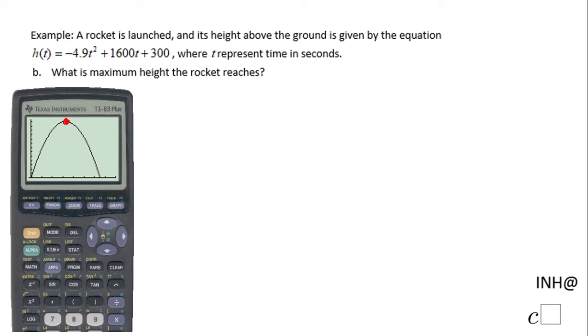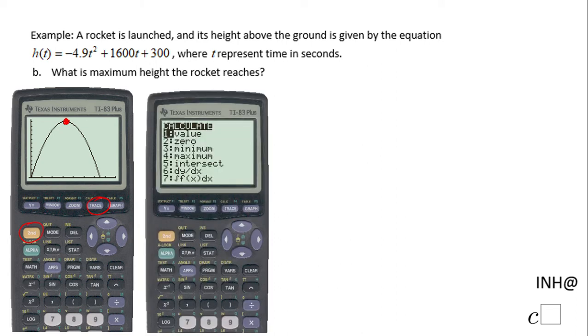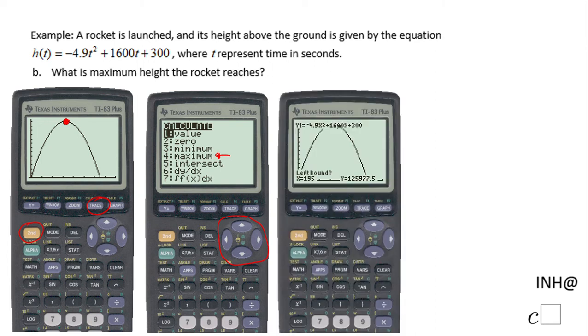For that reason I'm gonna click second calc which are right here. You get this menu and if you notice number four says maximum. So you have two choices: you can use this arrow menu and go down and click enter, or just press four.